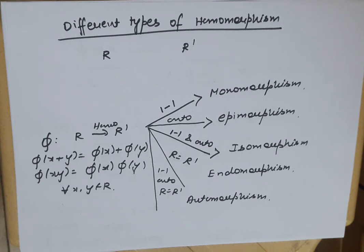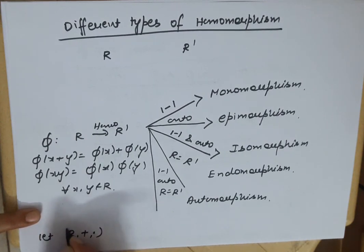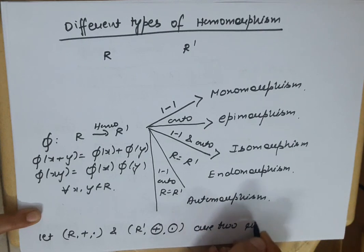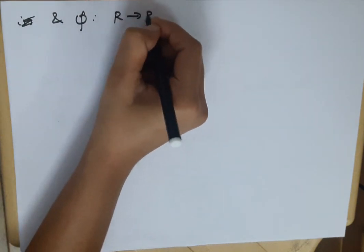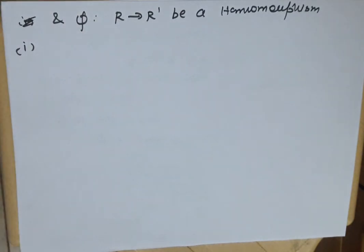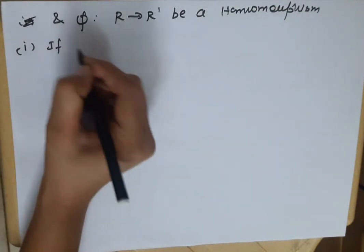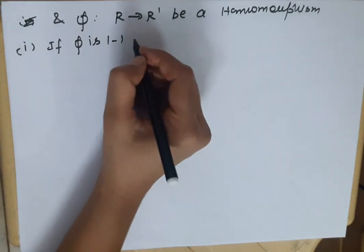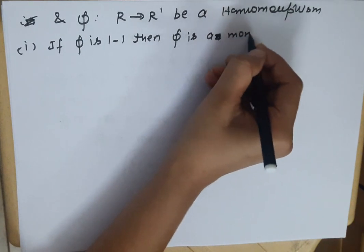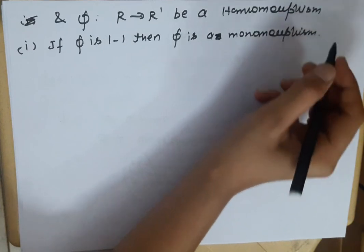Now I start with formal definitions. Let (R, +, ·) and (R', ⊕, ⊙) be two rings, and let φ from R to R' be a homomorphism. First condition: if φ is one-to-one, then φ is a monomorphism.